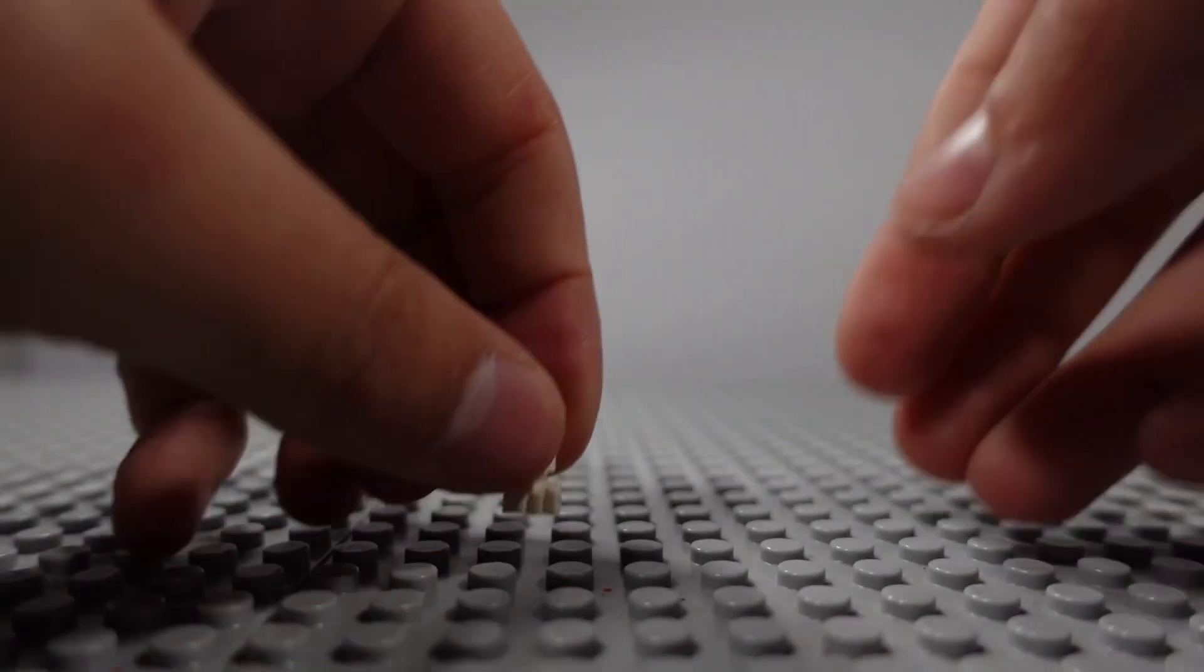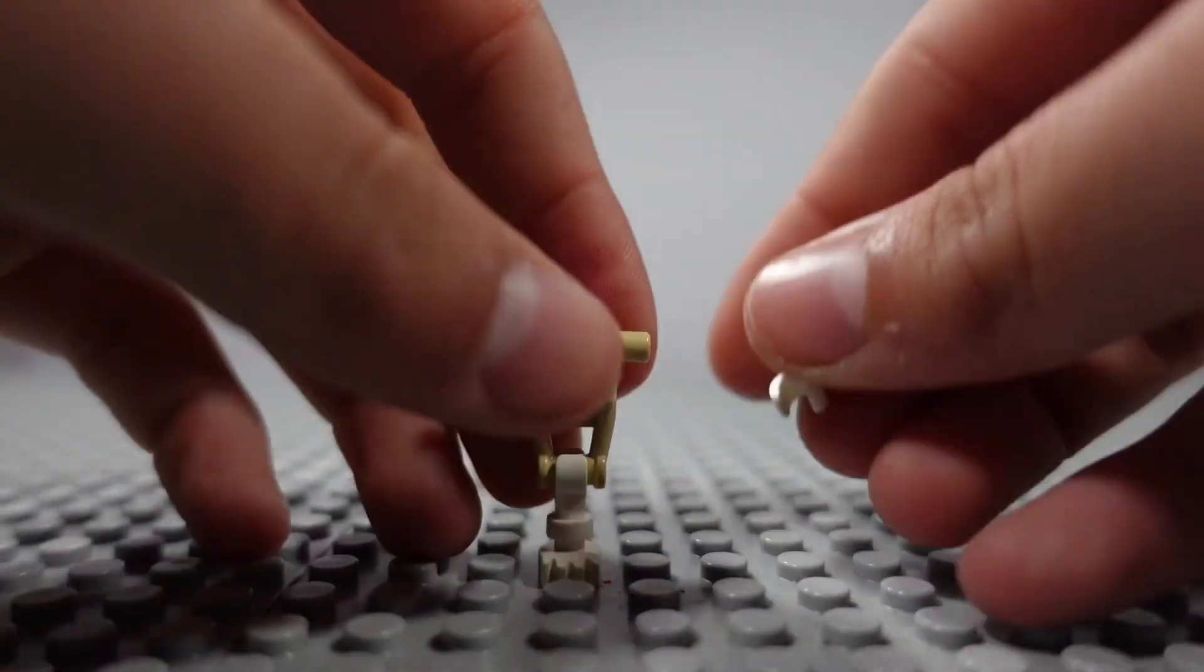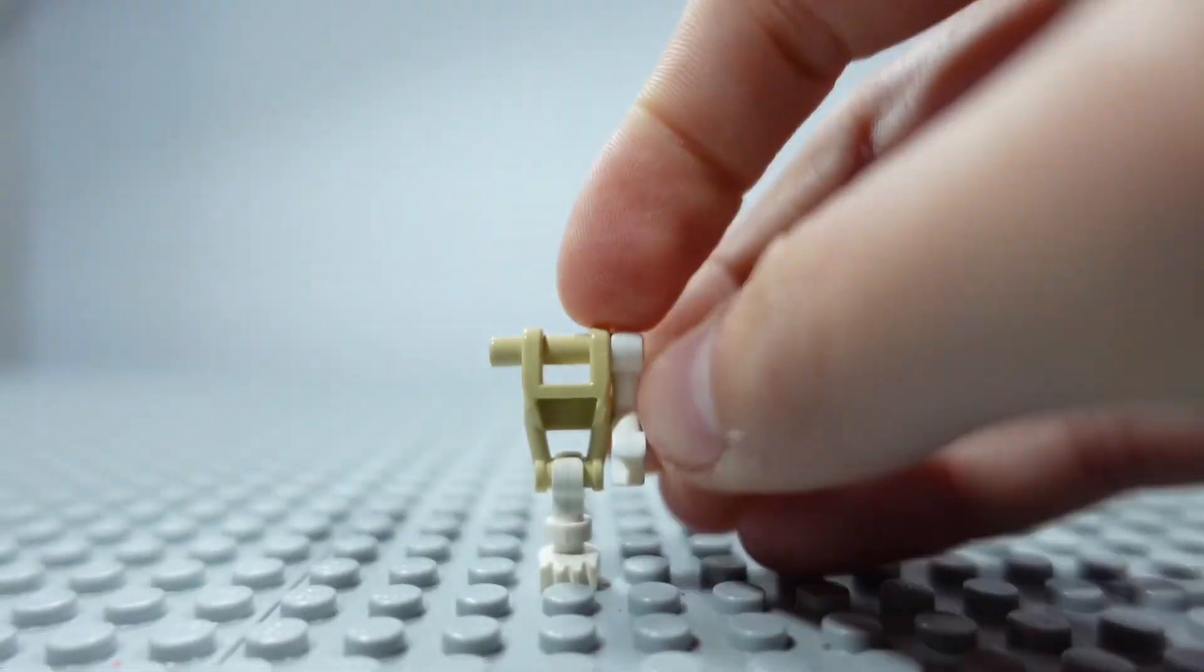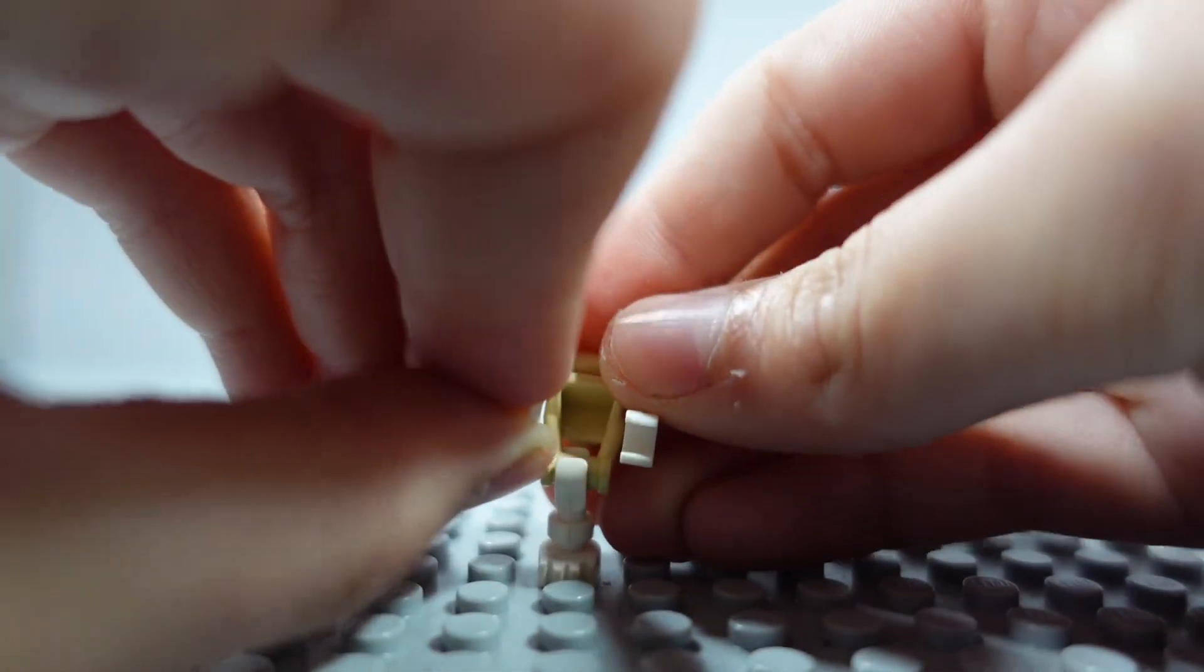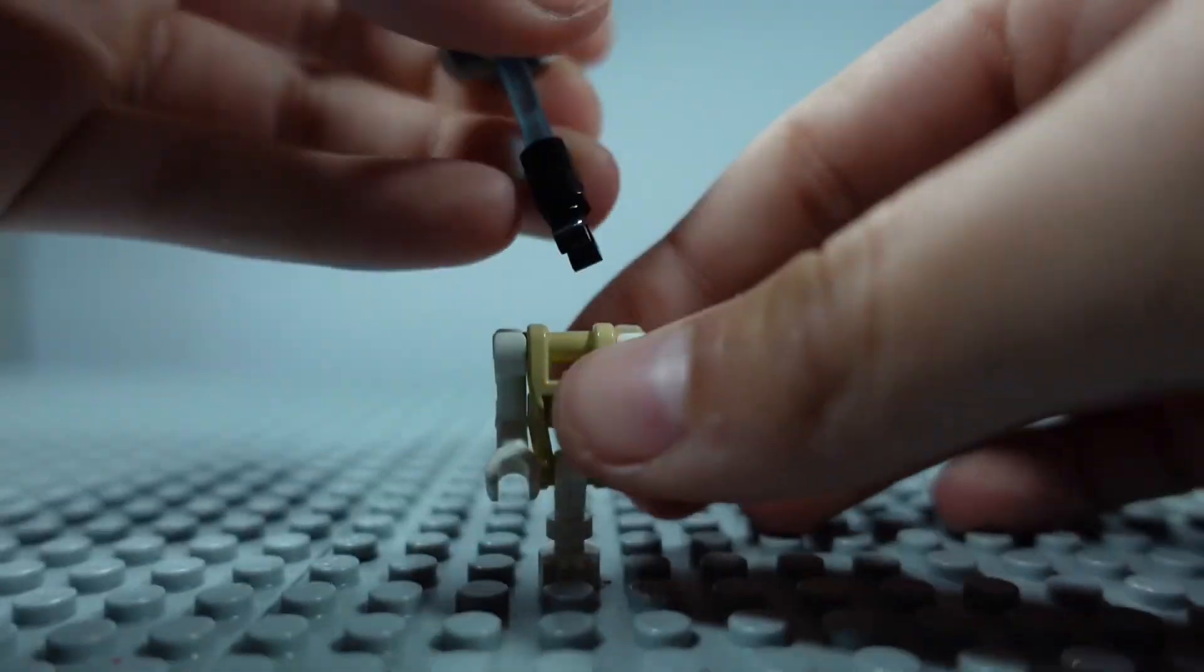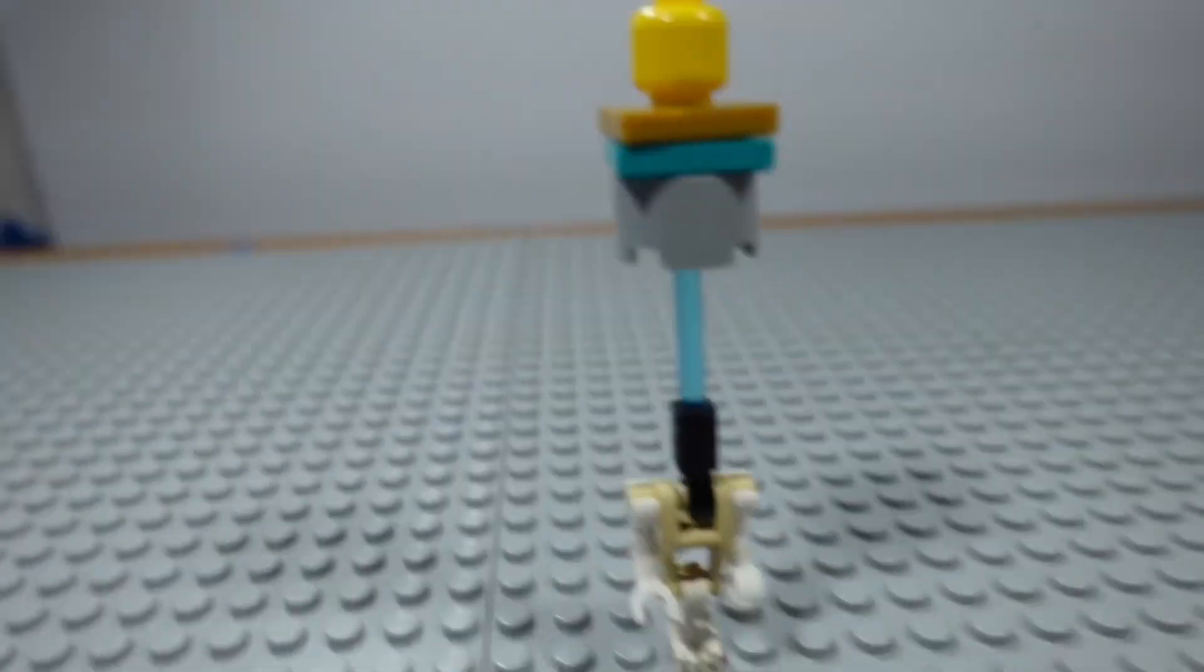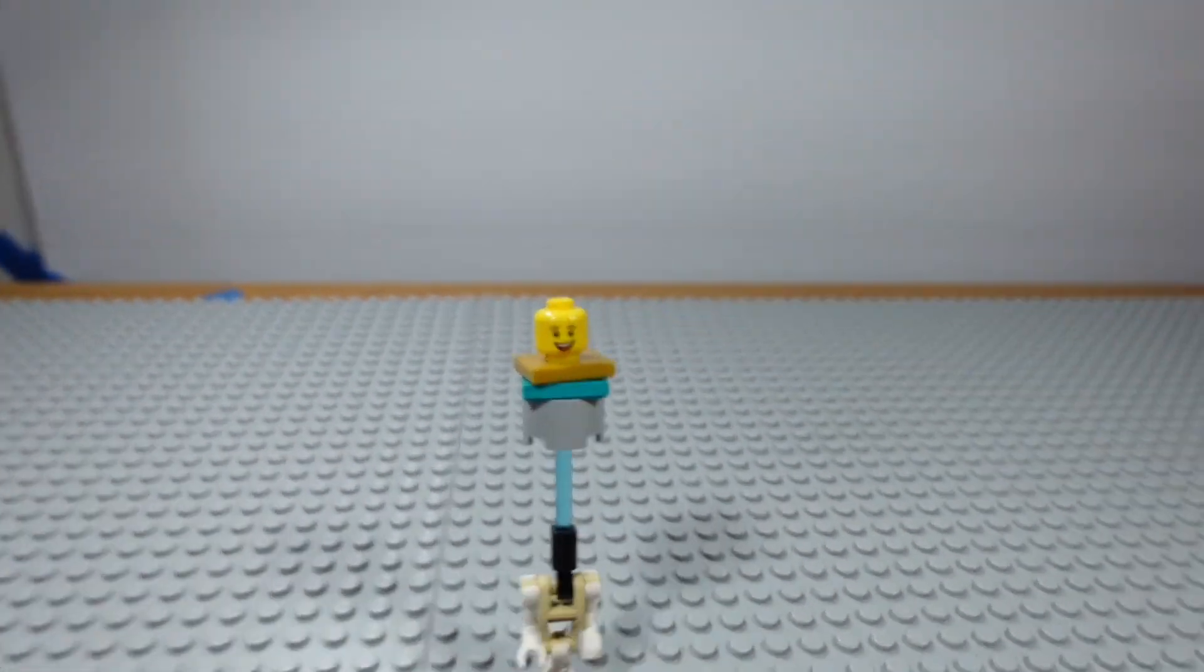Now last but not least, we have this guy which is a combination of a skeleton and a Star Wars droid. And boom, he is taller. Bro's out to get you.